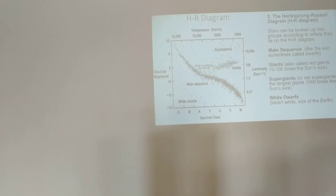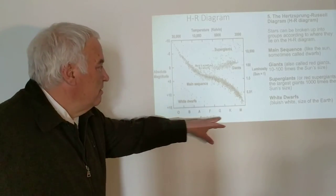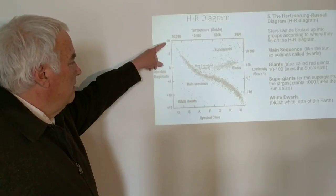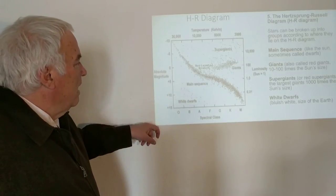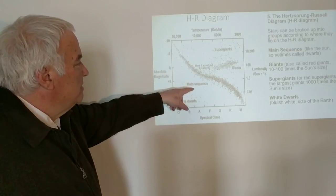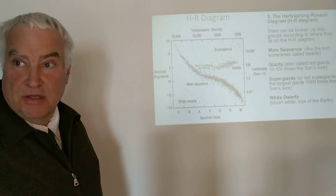To remind you, the HR diagram is the plot of the spectral class versus luminosity. The spectral class is on the x-axis, luminosity on the vertical axis, and we have the main sequence, the giants, the supergiants, and the white dwarfs.